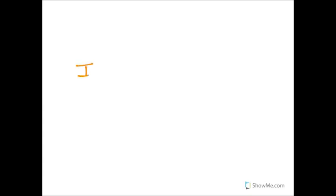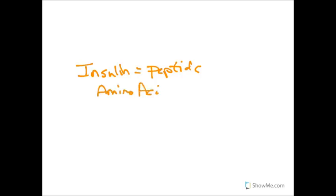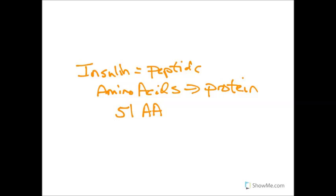What is insulin? Insulin is a peptide hormone. It is made up of a sequence of amino acids that come together to make a protein. Insulin is somewhat of a small protein — about 51 amino acids in size. It's one of the short polypeptide proteins, rather than glycoproteins — what we consider a short polypeptide, less than 200 amino acids.